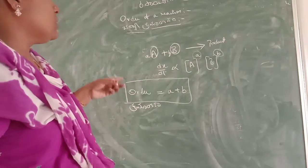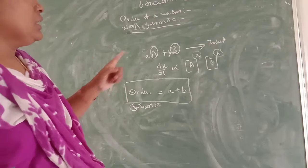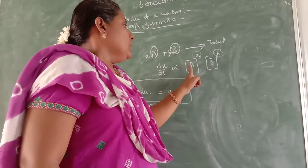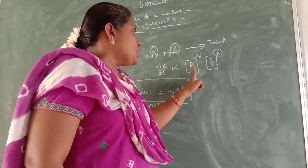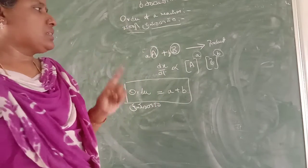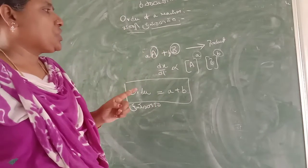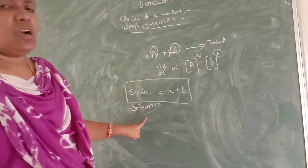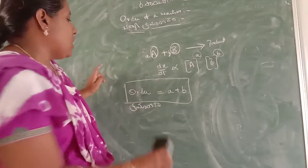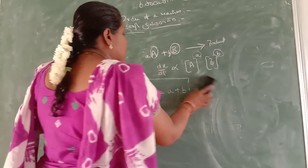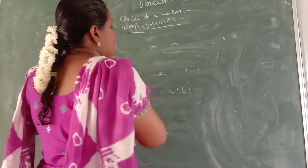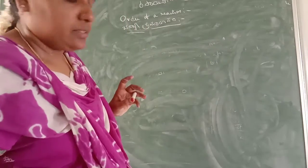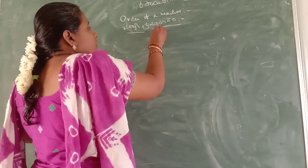So, the sum of the powers of the concentration of reacting molecules — the sum of powers of concentration of reacting molecules — is known as the order (Arter). The order is denoted by small 'n'.